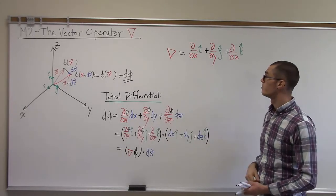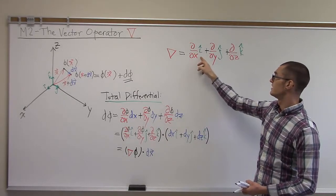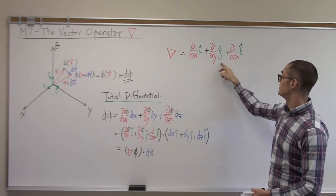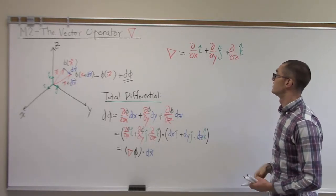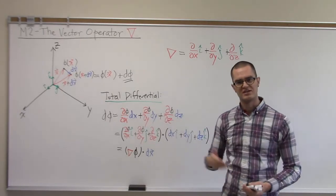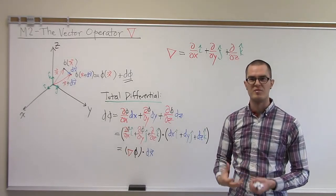So we define this operator as d by dx times i plus d by dy times j plus d by dz times k. In the next video, we'll look at some of the common operations that we do with that.